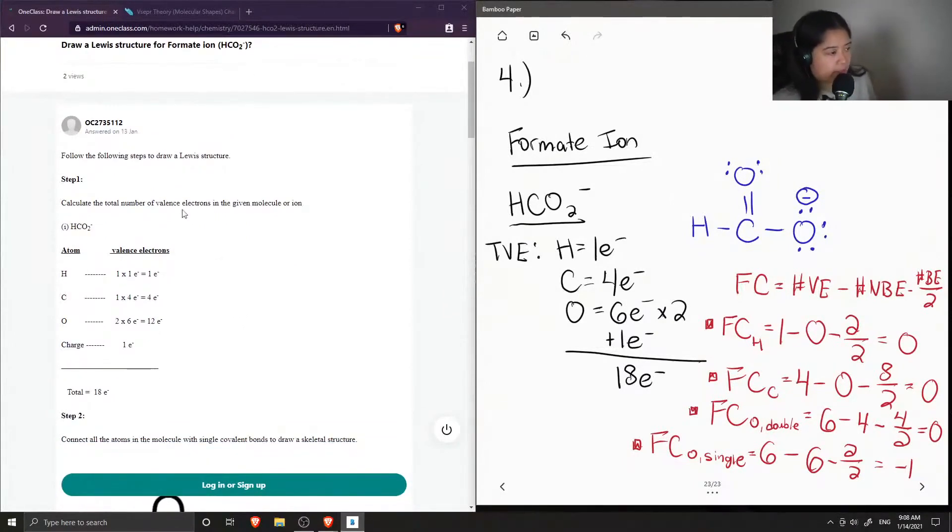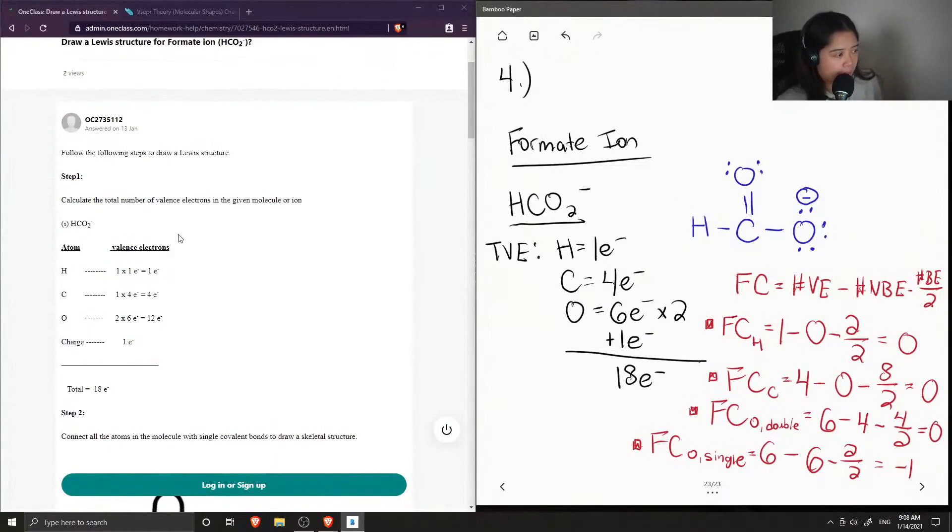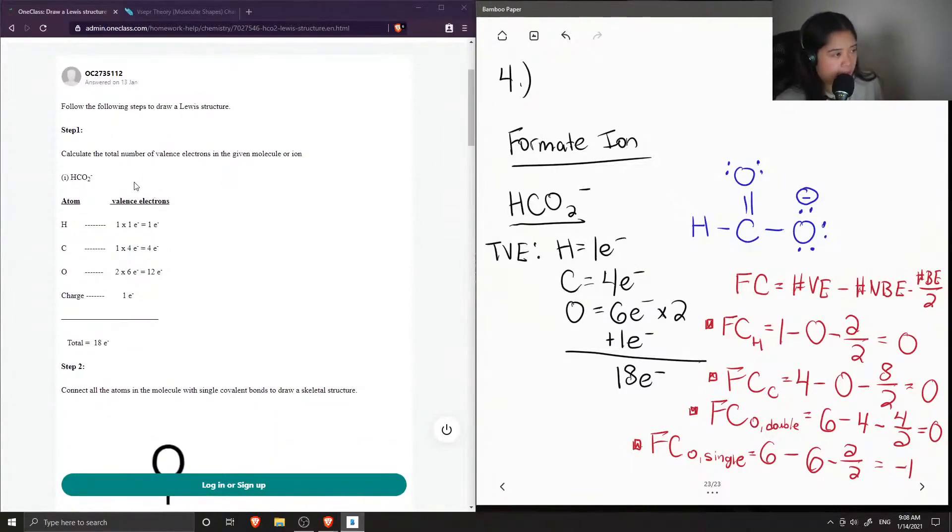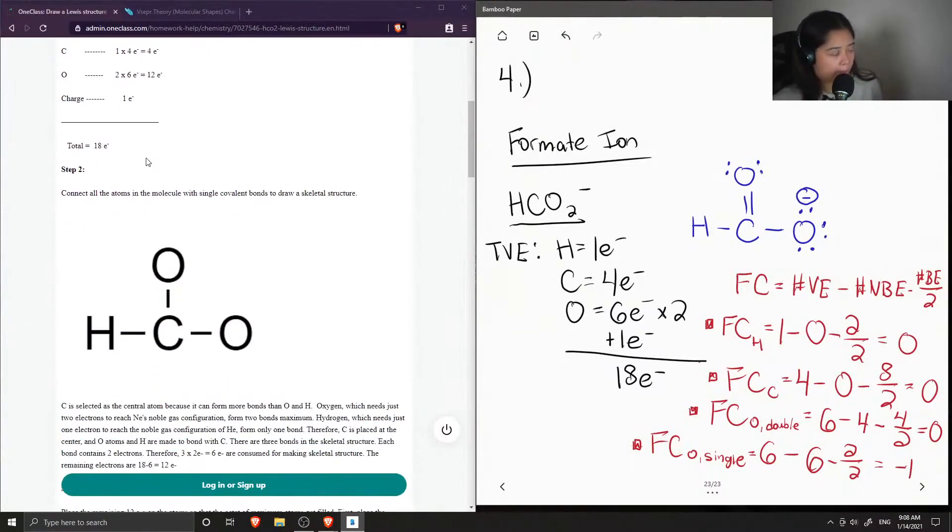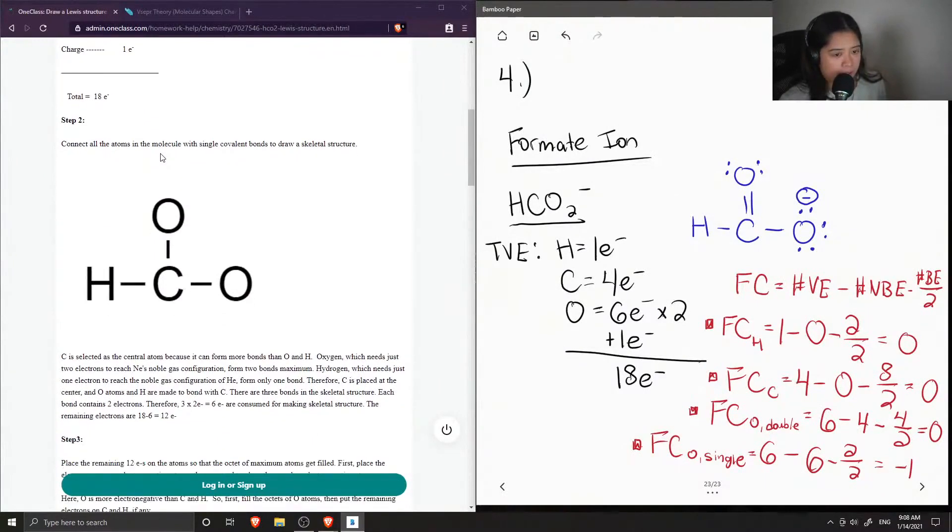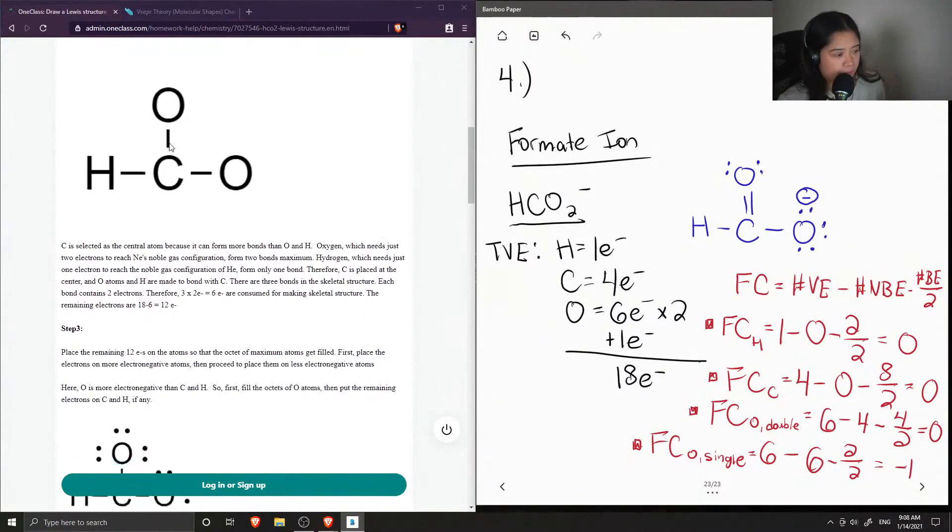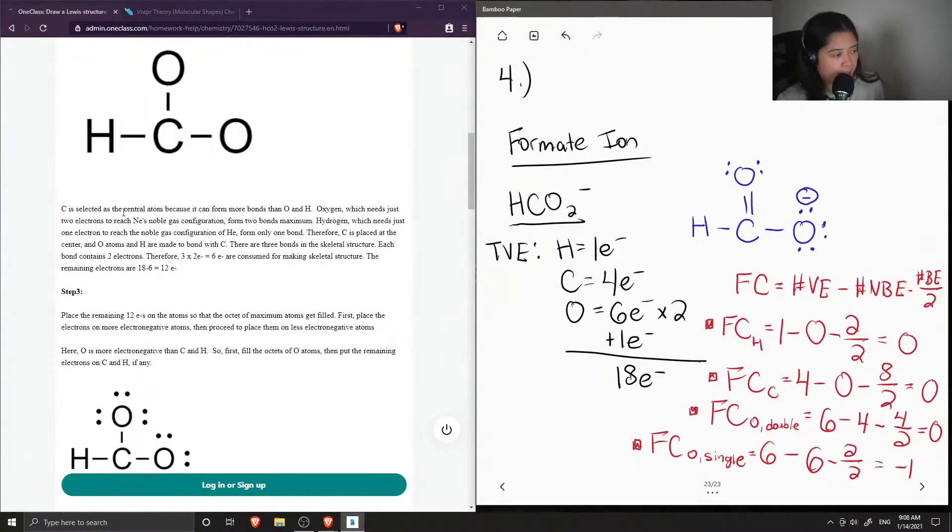Follow the following steps to draw a Lewis structure. Step one, calculate the total number of valence electrons. So they got 18. Step two is to connect all the atoms in the molecule with single covalent bonds to draw a skeletal structure. So then they said that carbon is selected as the central atom as it can form more bonds than oxygen and hydrogen.